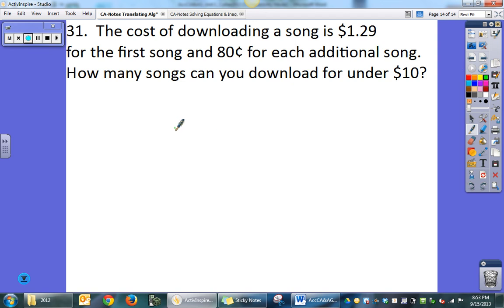Last one. The cost of downloading a song is $1.29 for the first song and $0.80 for each additional song. How many songs can you download for under $10? So my initial is $1.29 plus $0.80 per song. And I want that to be less than $10. Notice that it doesn't say equal to $10. It has to be under $10. So there is my inequality for that. And I could solve, which we'll talk about in the next one.